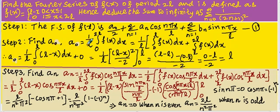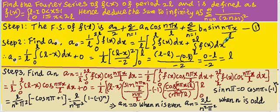a0 is defined by the formula 1/L times the integral from 0 to 2L of f(x) dx. The function has been defined between two intervals — between 0 and L, and L and 2L — so we have to write the expansion for these two intervals.